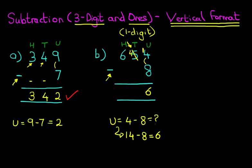Now we do the tens. How many tens are there? Well, there are 4 — it's not 5, we crossed out the 5, and it is now 4. So 4 minus 0 is 4. The hundreds column: we've got 6 minus 0, which is 6. And that is our answer: 646. So that one was a little bit tricky, but we work through it, and we always have to follow the same principles.